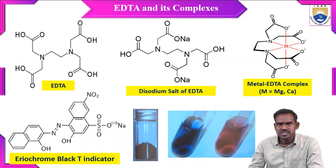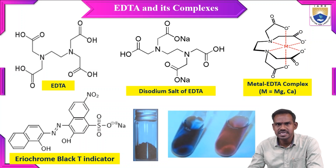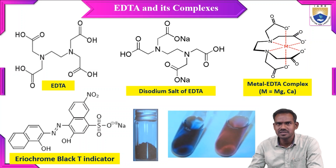Here I have shown some of the structures of the important ligands, important complexes, and also the indicator. The ligand involved in this titration is EDTA — its full form is ethylenediamine tetraacetic acid. It has six donor atoms in its structure: four oxygen atoms and two nitrogen atoms, so it acts as a hexadentate ligand. All six donor atoms bind with the hardness-causing cations such as calcium ion and magnesium ion present in the water sample, and EDTA will make a complex with Mg2+ as well as Ca2+.